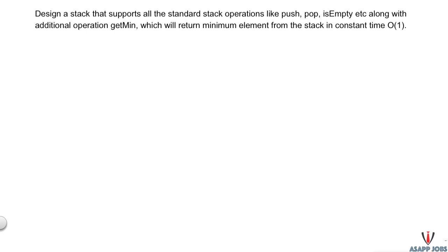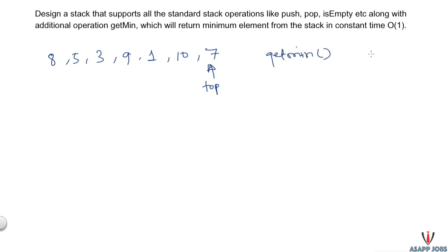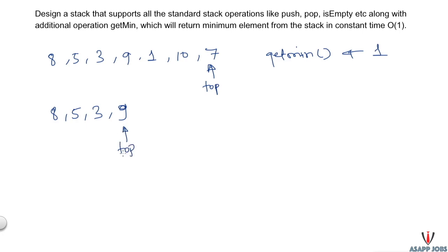Let's understand the problem with an example. If we have pushed some elements into our stack with a given top element, then when we call getMin it should return one, just because one is the minimum element of the stack. And if we have done pop operation three times, leaving certain elements where nine is the top, calling getMin should return three, because three is the minimum element among those stack elements.